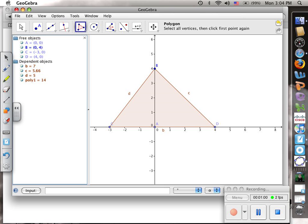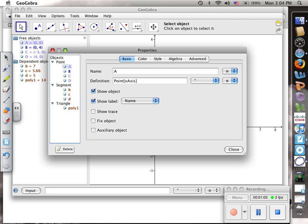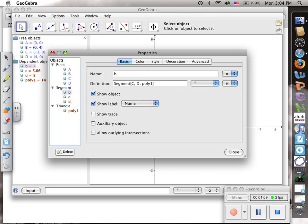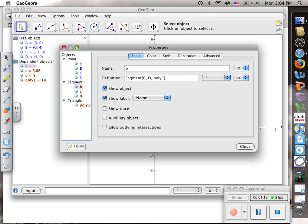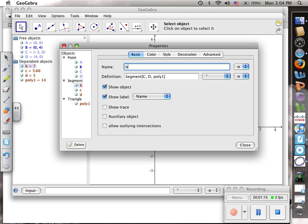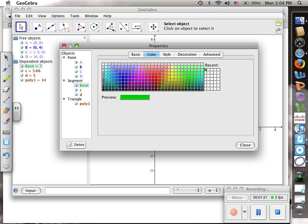Let's say we want to rename our sides. We'll edit properties of segment b, which is our bottom one down here. We can look just to make sure. Segment b is across the bottom, so let's change the name to base and change the color to green.